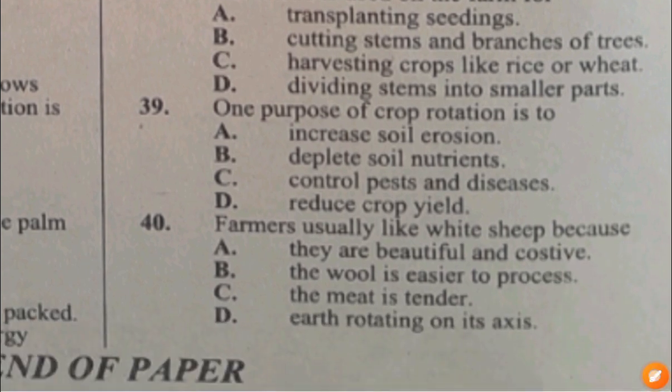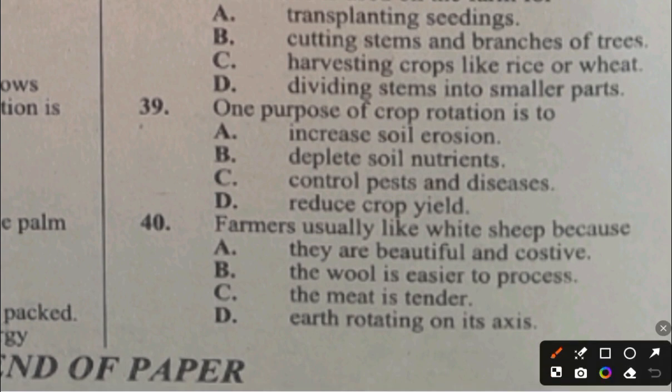Question 39. One purpose of crop rotation is to: A. Increase soil erosion, B. Deplete soil nutrients, C. Control pests and diseases, D. Reduce crop yield. The answer to question 39 is C, control pests and diseases.